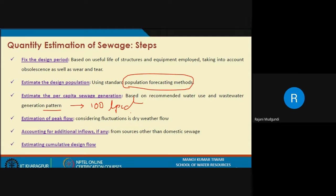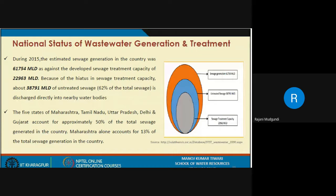Accounting for additional flow from sources other than domestic sewage — such as water infiltrating into the sewer through leakages or faulty joints — and then estimating cumulative design flow completes the entire design for the sewerage system.